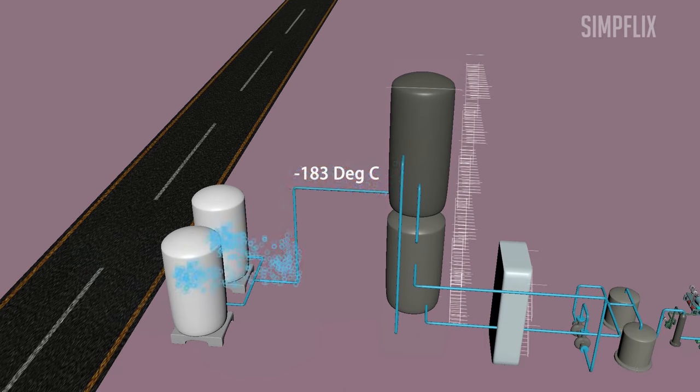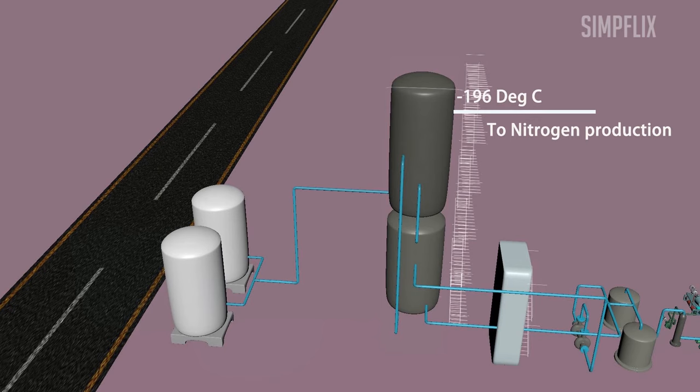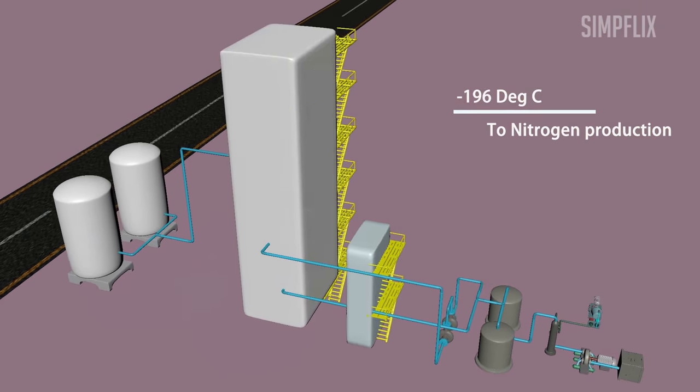Because of this temperature gradient, oxygen will be liquefied at minus 183 degrees Celsius area and collected. Argon will be liquefied at minus 186 degrees Celsius area and collected. Nitrogen will be liquefied at the top column where temperature is at minus 196 degrees Celsius and collected.